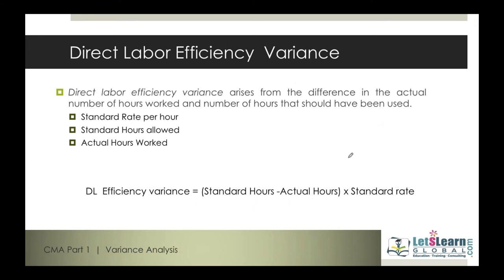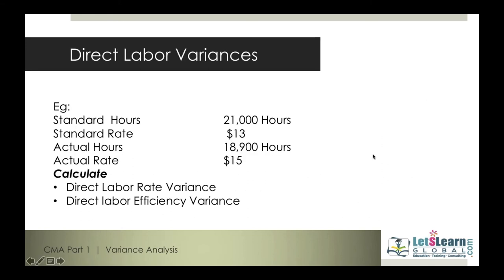Now, after understanding direct labor rate variance and direct labor efficiency variance, just as with direct material mix variance and yield variance, we'll discuss how direct labor mix and yield variances take place. Here's a homework question: for direct labor rate variance and efficiency variance — standard hours allowed 18,900, actual hours 21,000; standard rate $13 but actual rate paid was $15.